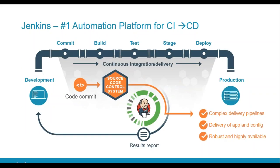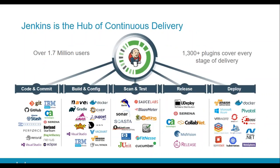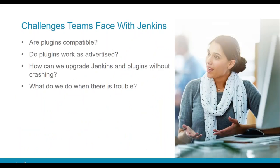Let me set the stage. Many people on this call are very familiar with the fact that Jenkins is the number one automation platform for continuous integration. It's rapidly advancing to become the number one automation platform for continuous delivery, because it's proven to create complex continuous delivery pipelines. Jenkins has an enormous community of users who contribute plugins on a regular basis — well over 1.7 million users and roughly 1,300 plugins that connect Jenkins to a variety of different tools in the DevOps space, running the gamut from code and commit all the way to deploy.